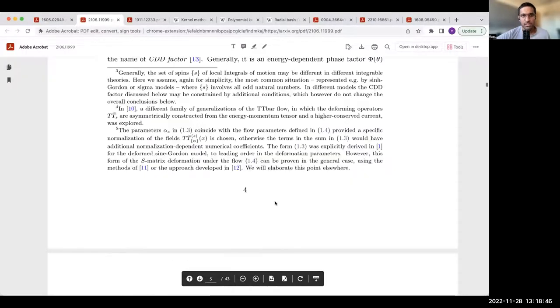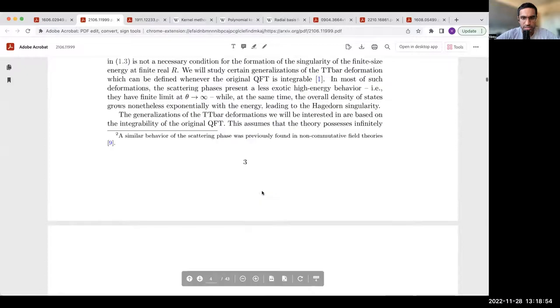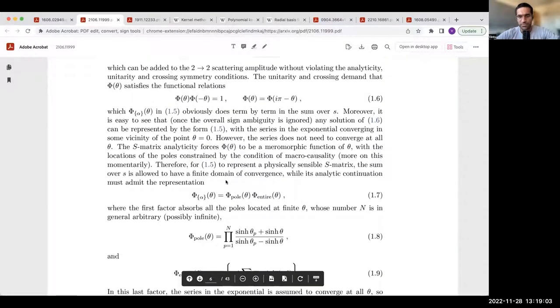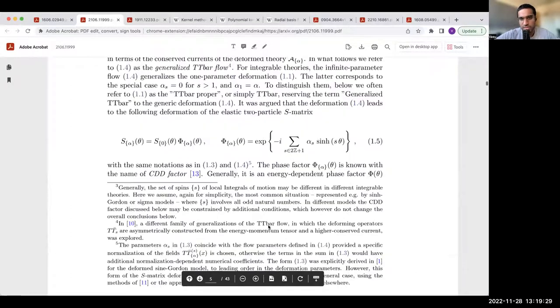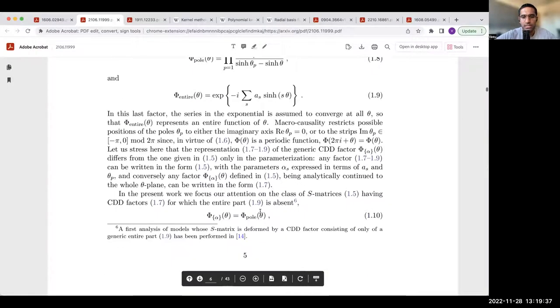What's interesting about these generalized tt-bar deformations is that they can be used as a basis to construct S matrices, like non-trivial S matrices starting from trivial theories. In this paper, what the authors do is consider a family of theories that you get by looking at a pure CDD phase formula. If you had the original S matrix be one or minus one corresponding to a free bosonic or free fermionic theory, then under a family of such generalized tt-bar deformations, we get the following generic formula for what the CDD phase contribution to the S-matrix can be. This can be resummed into a pole part and an entire function part.